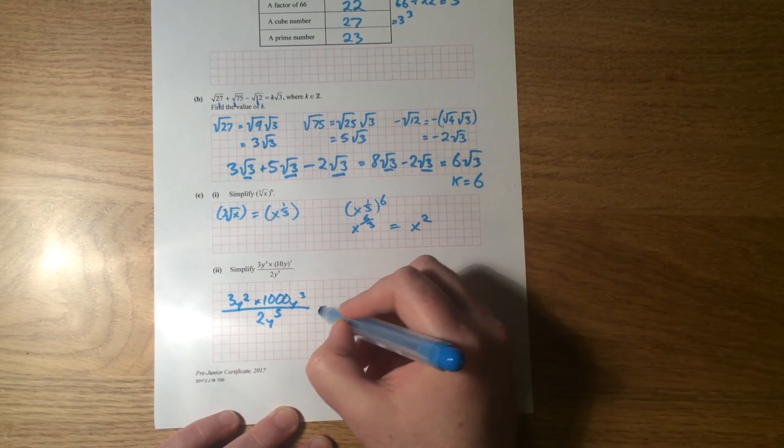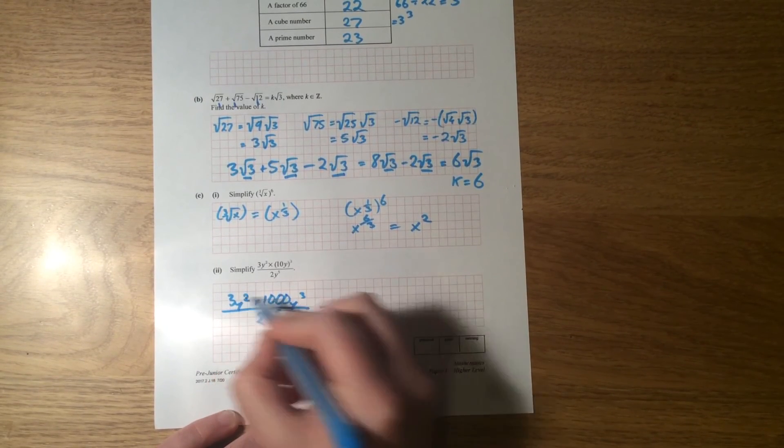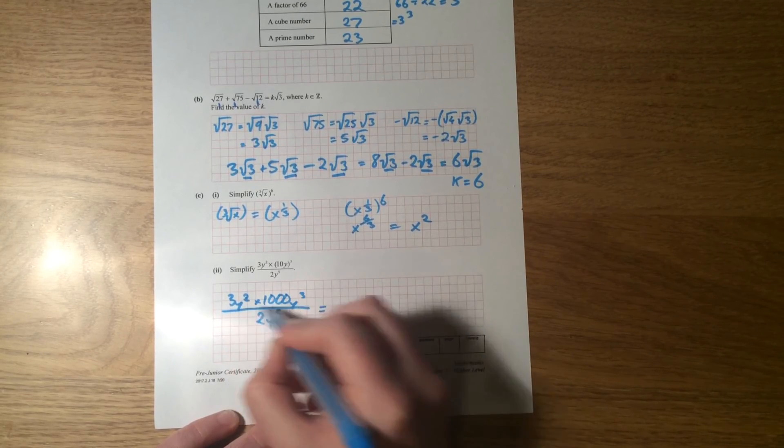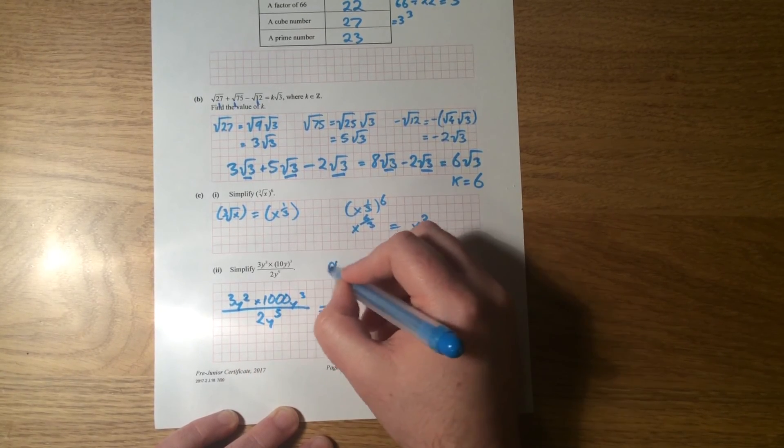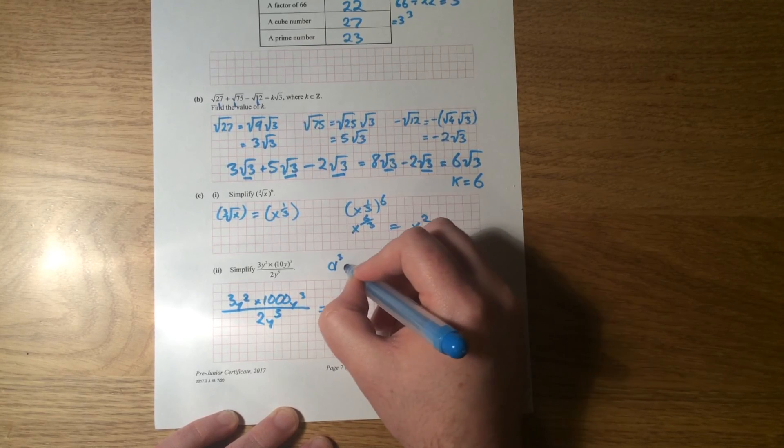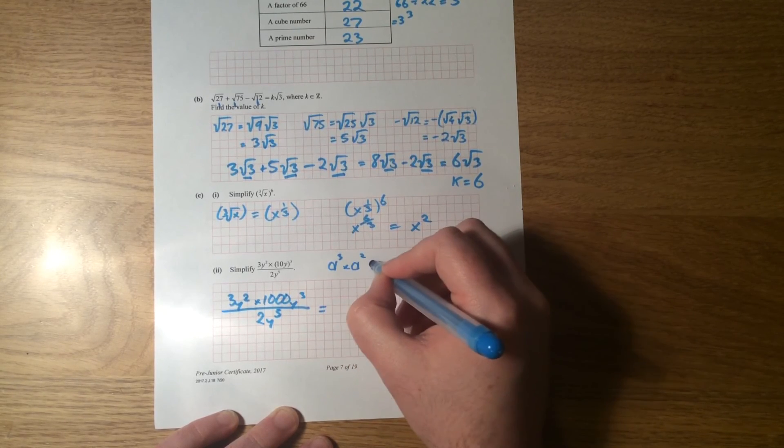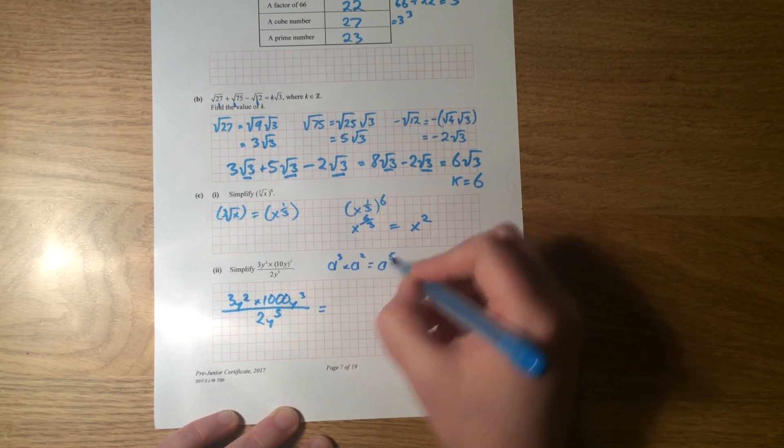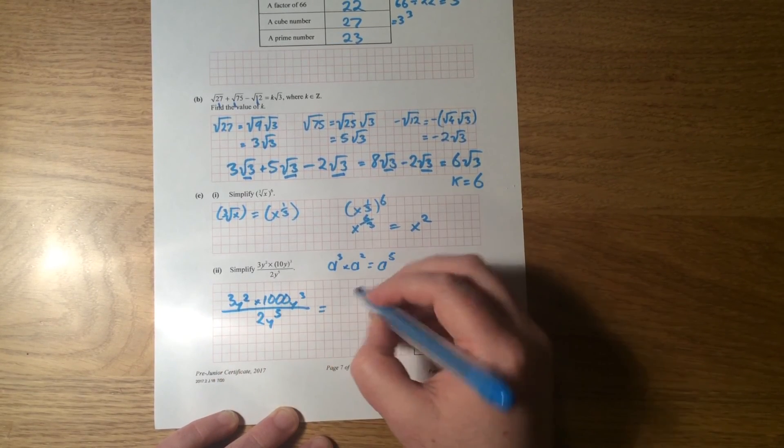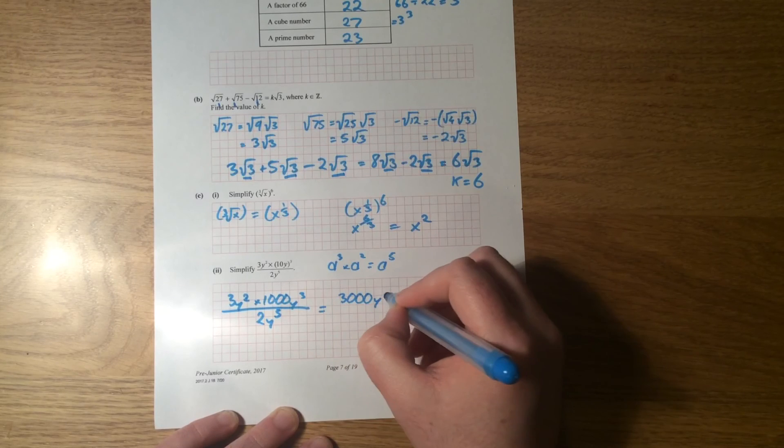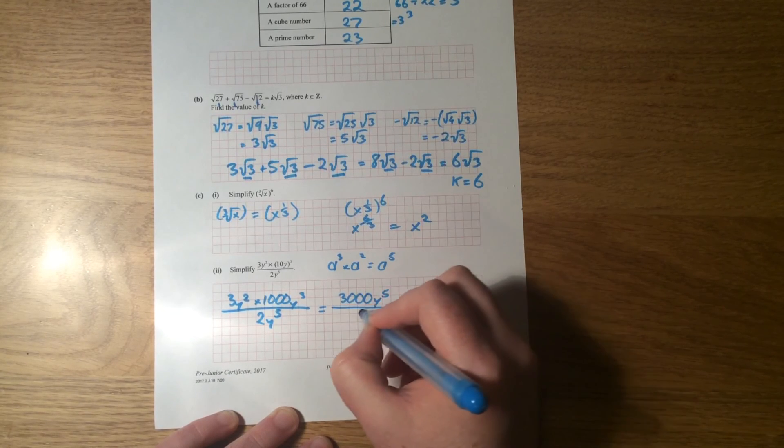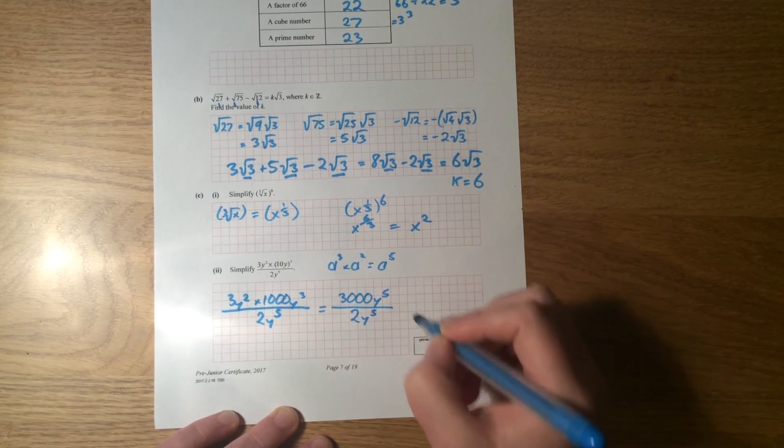All right, and if you multiply, see again, now our terms are the same, y squared, sorry, y squared and y cubed, but they both have y's. If you know your law of indices, then, so any number to the power of, say, 3 multiplied by the same number to the power of 2 is equal to a to the power of 5. So y to the power of 2, y to the power of 3 becomes 3,000 y to the power of 5 over 2y to the power of 5.